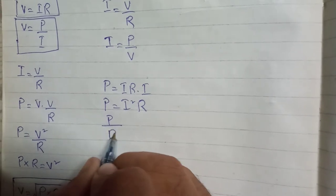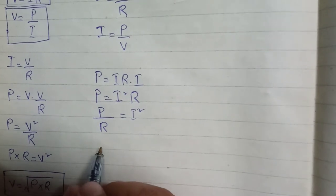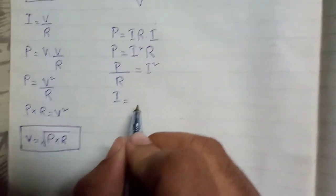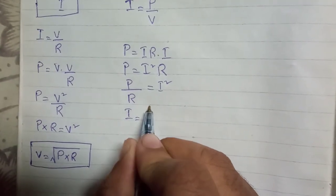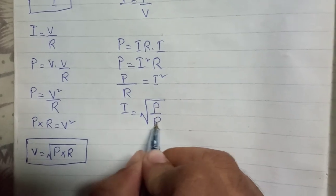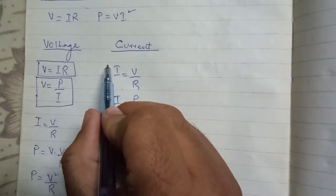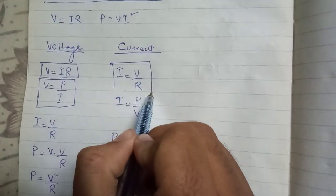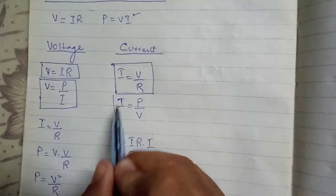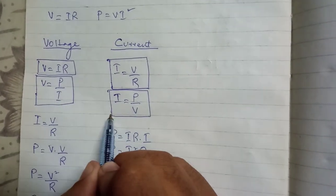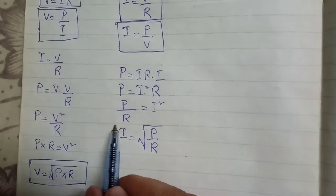P upon R is equal to I squared. Here we remove the square from I and the square root comes on the other side, so it becomes I is equal to the square root of P upon R. This is the third formula for current. So the first formula is I = V/R, the second is I = P/V, and the third is I = √(P/R).